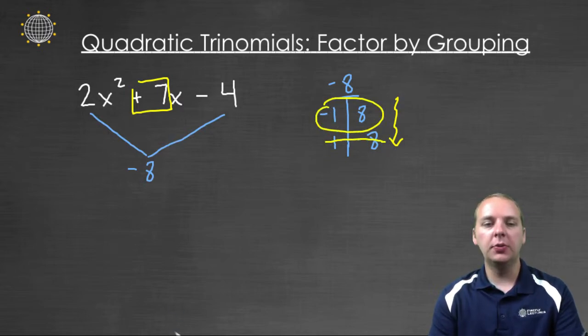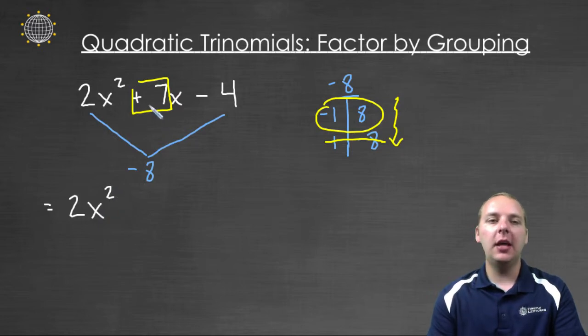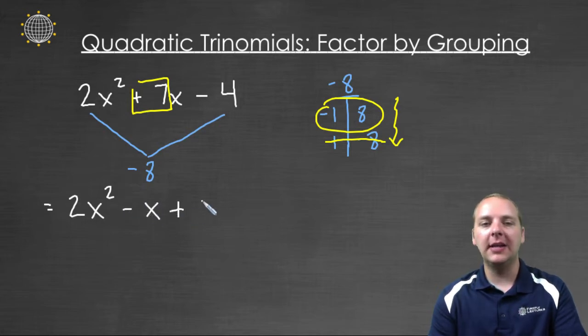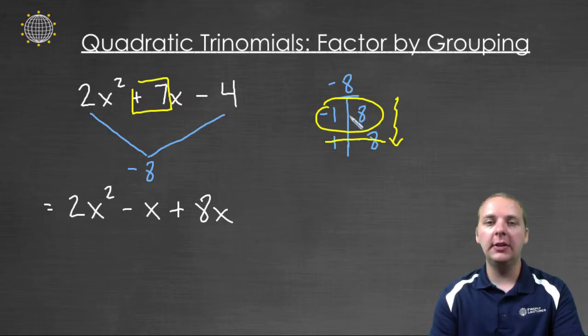So what we're going to do is we're going to take our polynomial and we're going to rewrite it. We're going to write it again, but this time we're going to write it as 2x². And instead of saying +7x, I'm going to write +7x as -1x + 8x. You see I'm using these terms here, these factors of -8 to rewrite the middle term. And then of course we have our -4.